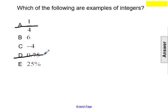E: 25 percent can be rewritten as a decimal of 0.25, which is not a positive counting number, so E would not fit our definition either. That leaves us with our answer of B and C.